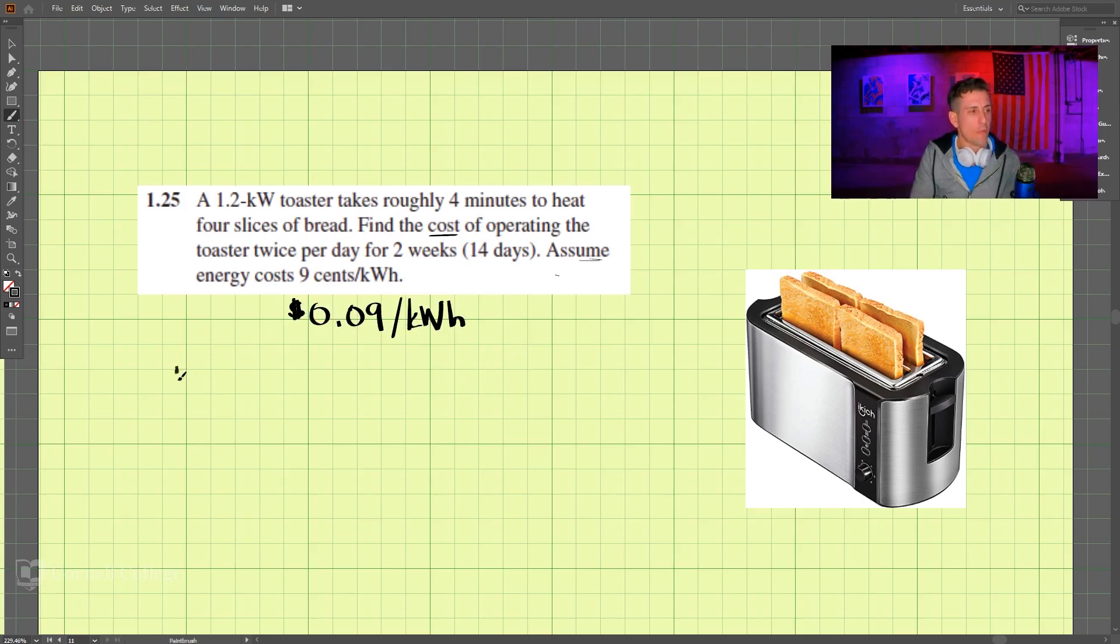So if we have 1.2 kilowatts and we multiply that by four minutes, we better put that in hours. We know that there are 60 minutes per hour, so four divided by 60 minutes per hour will give us kilowatt hours.